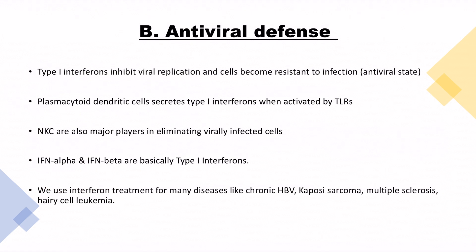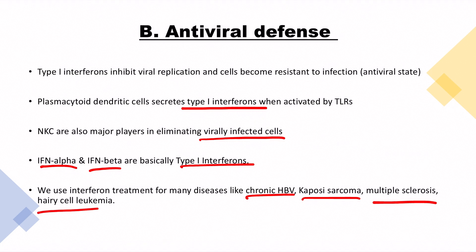Antiviral defense: type 1 interferons inhibit viral replication and make cells resistant to infection. Plasmacytoid dendritic cells of innate immunity secrete type 1 interferons when activated by toll-like receptors. NK cells also play a major role in eliminating virus-infected cells. Interferon alpha and interferon beta are typically type 1 interferons. Interferon treatment is used for many diseases including chronic HBV, Kaposi sarcoma, multiple sclerosis, and hairy cell leukemia.